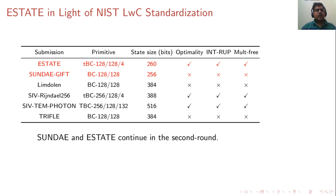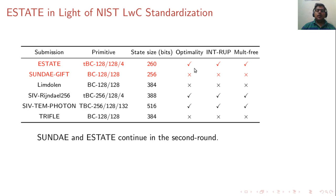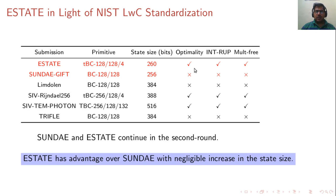Looking at STATE in the context of NIST LWC standardization: in the first round there were several candidates based on SIV or MAC-then-encrypt — including Sunday-GIFT, LMDOLAN, SIV-Rindal, SIV-TEM, Photon, and Trifle, among others. Among these, Sunday and STATE continued into the second round and have much smaller state sizes than the others. Sunday is slightly better by four bits, but STATE provides optimality, int-RUP security, and multiplication-freedom — advantages not present in Sunday-GIFT — with only a negligible increase in state size.